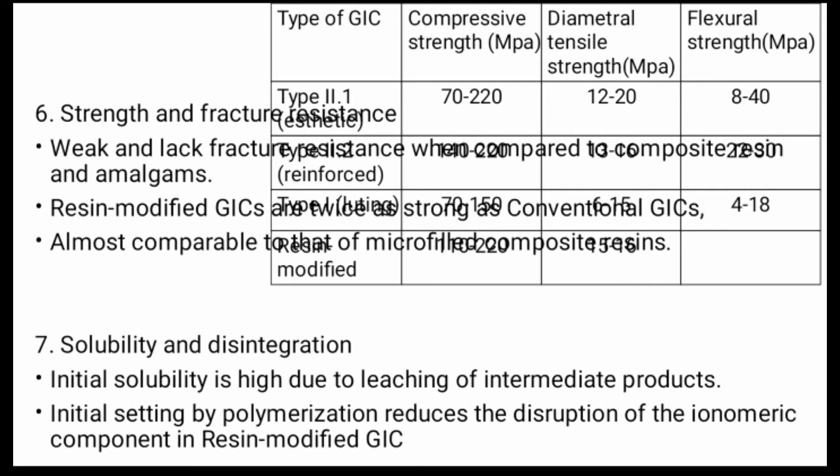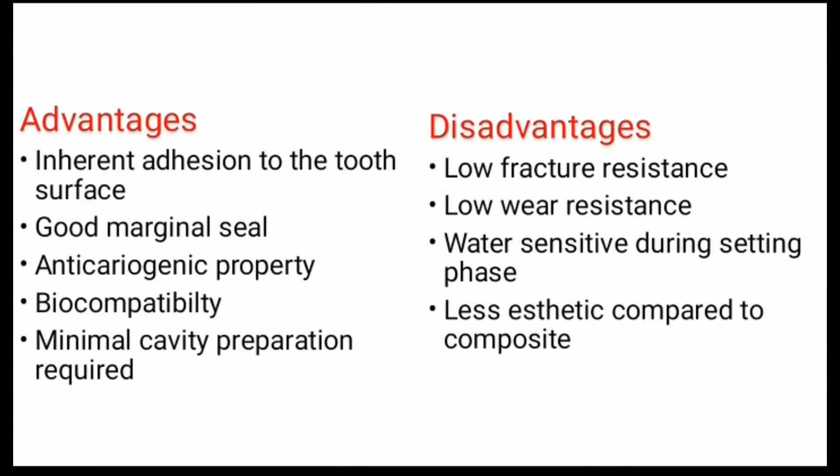The main advantages of glass ionomer cement are: inherent adhesion to tooth surface, good marginal seal, anti-cariogenic property, good biocompatibility, and minimal cavity preparation required. The disadvantages are: low fracture resistance, low wear resistance, water sensitivity during setting phase, and less aesthetic compared to composite resin.